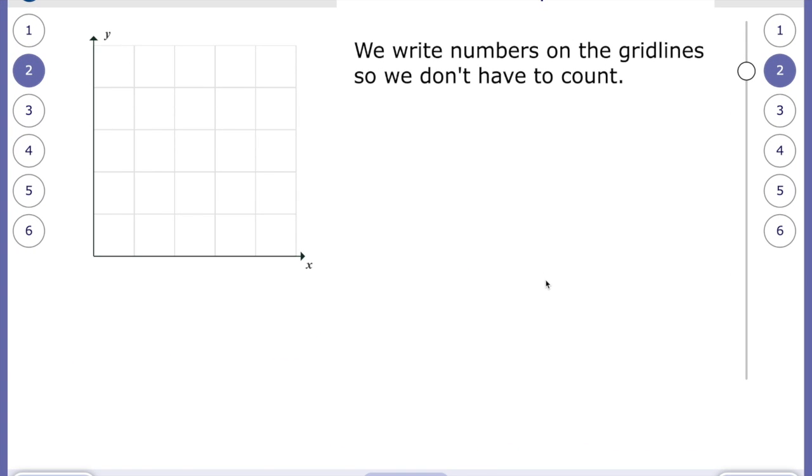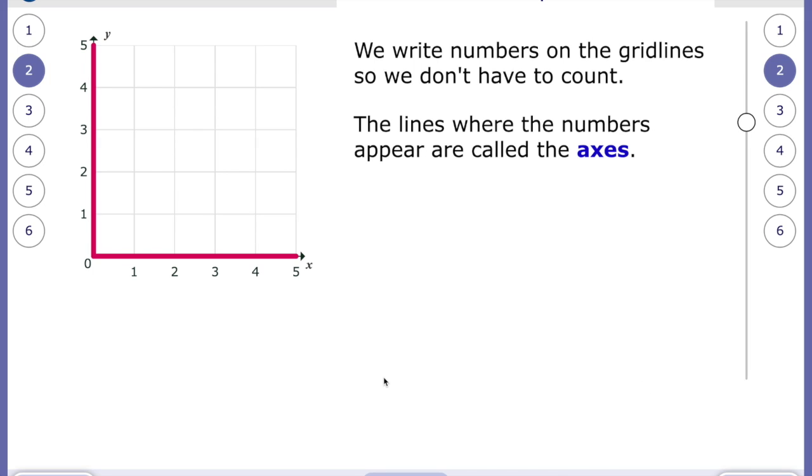Numbers on the grid line so we don't have to count. And if you're ever doing this in squared paper, this is the only time I can think of in maths where we don't want you to write the numbers in the box. We want you to write the numbers on the lines because it is the line that is the number. So if you look here, the one isn't written in a box. It's written on the line. If this line continued, it'd be written on the line.